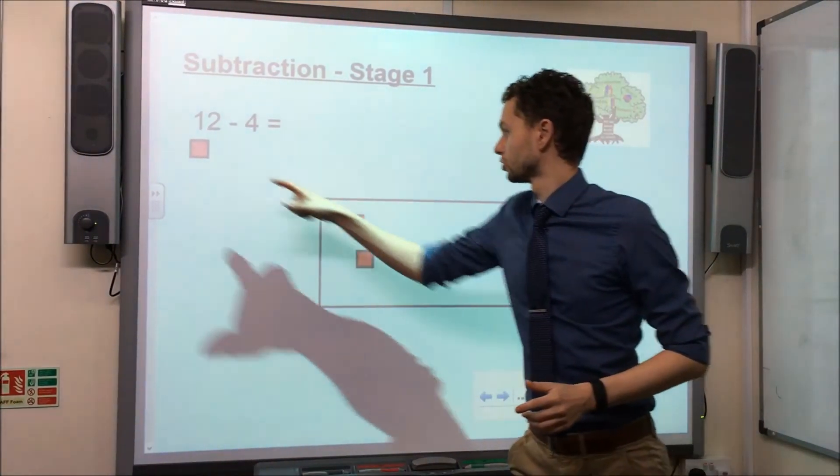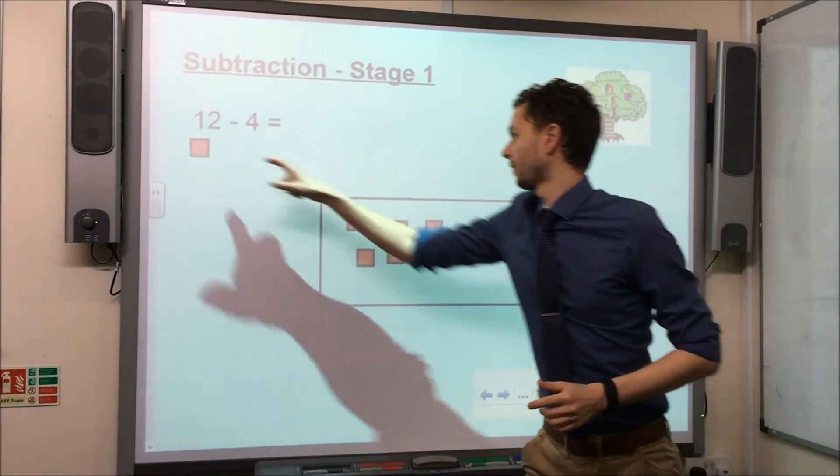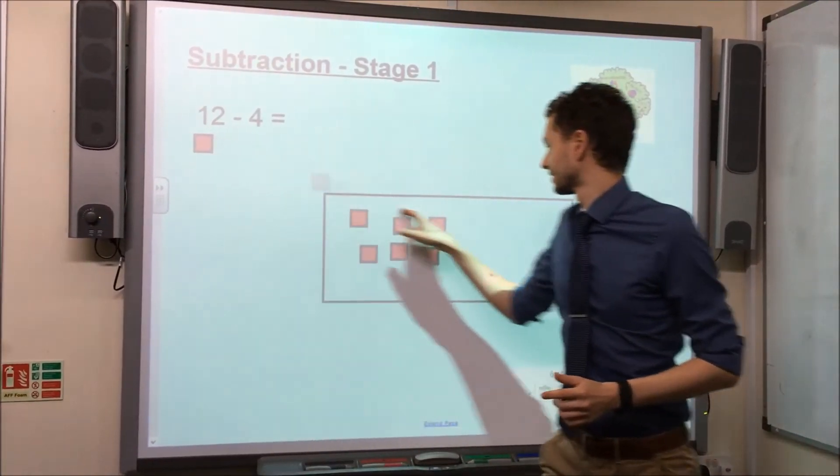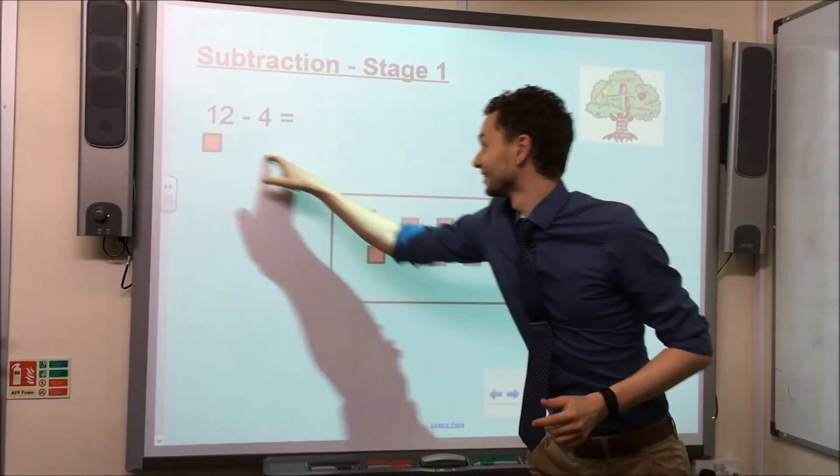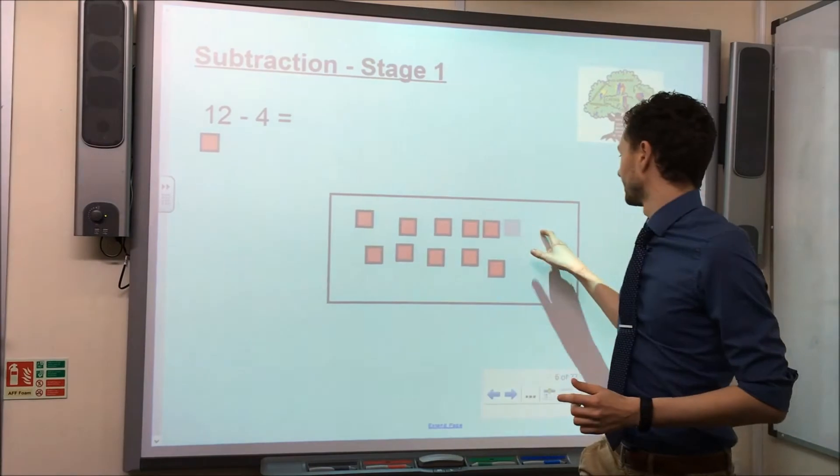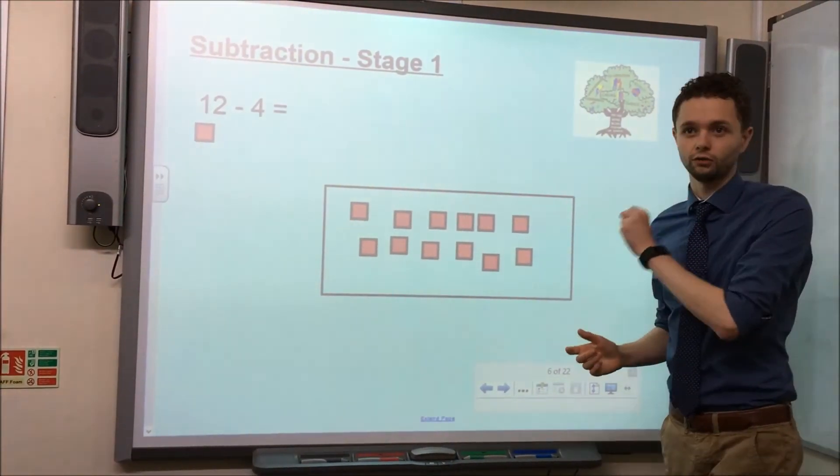So 1, 2, 3, 4, 5, 6, 7, 8, nearly there, 9, 10, 11 and 12. So I've got my 12 objects.